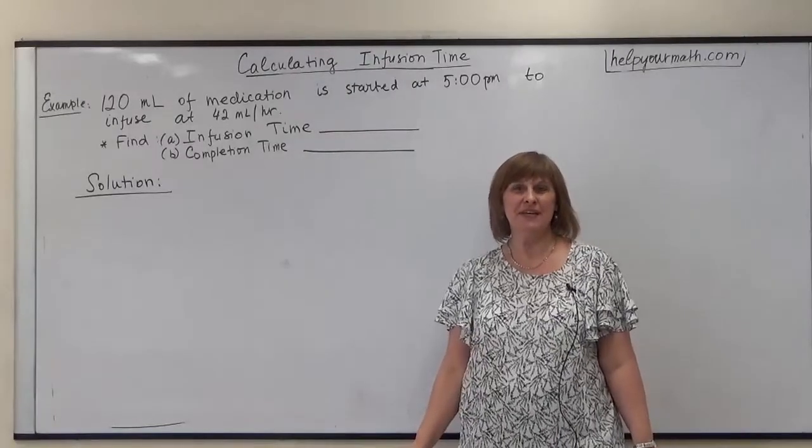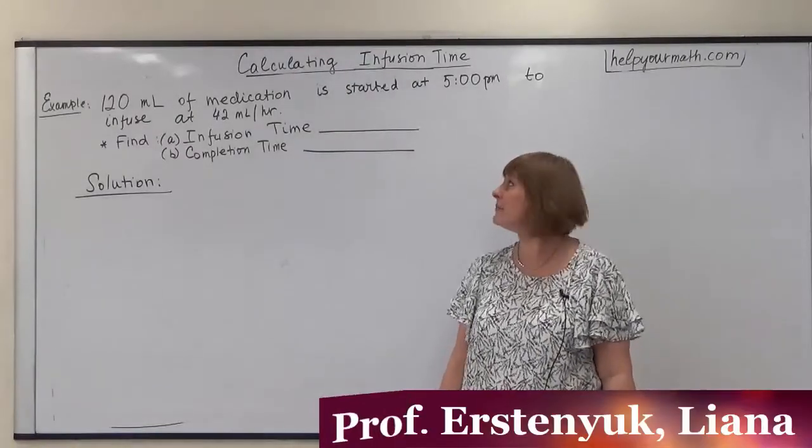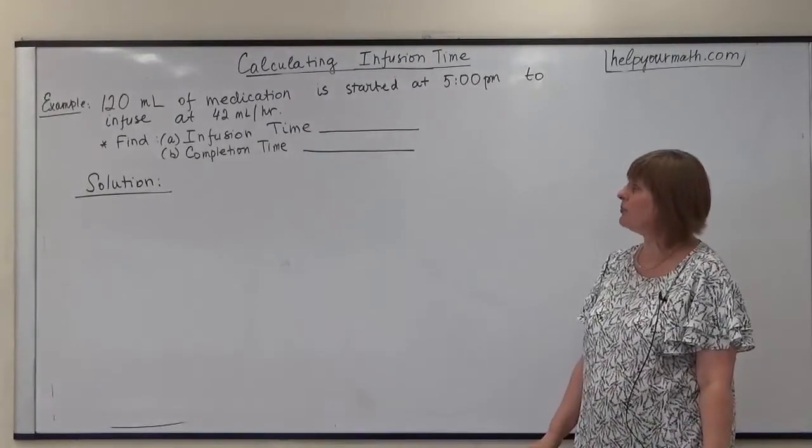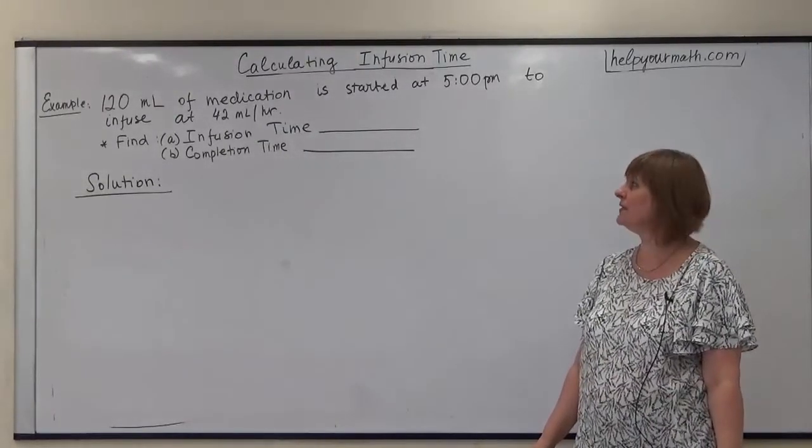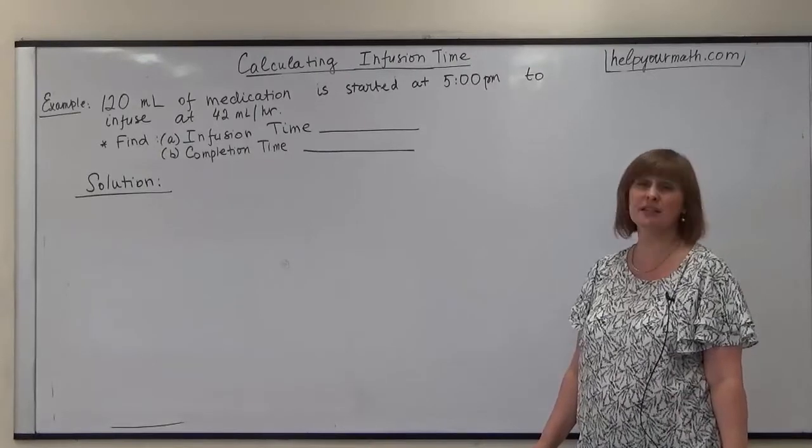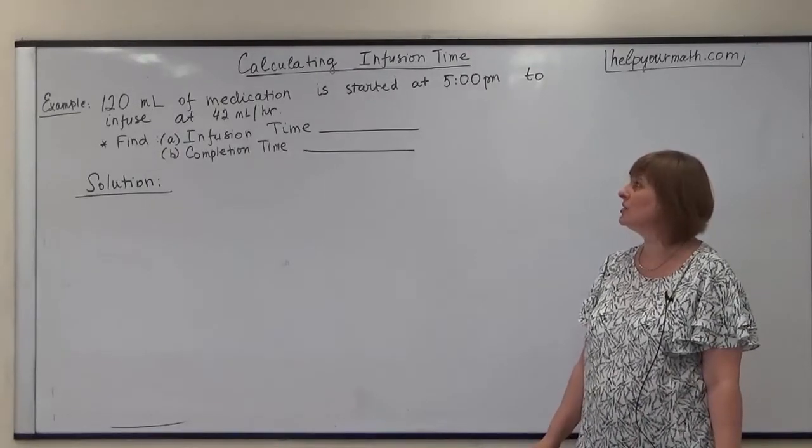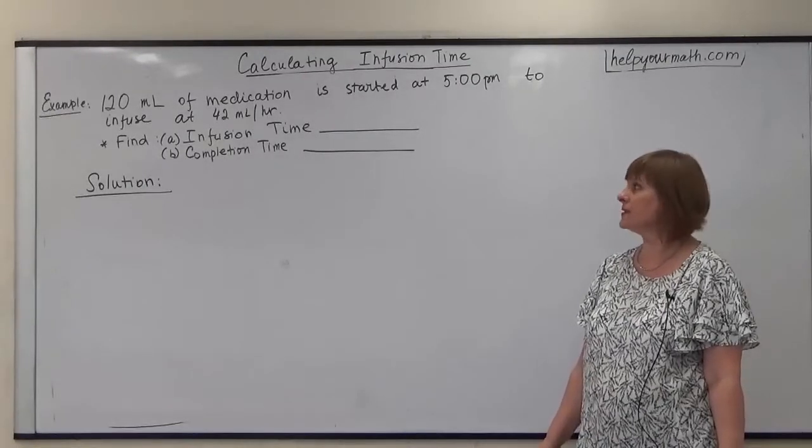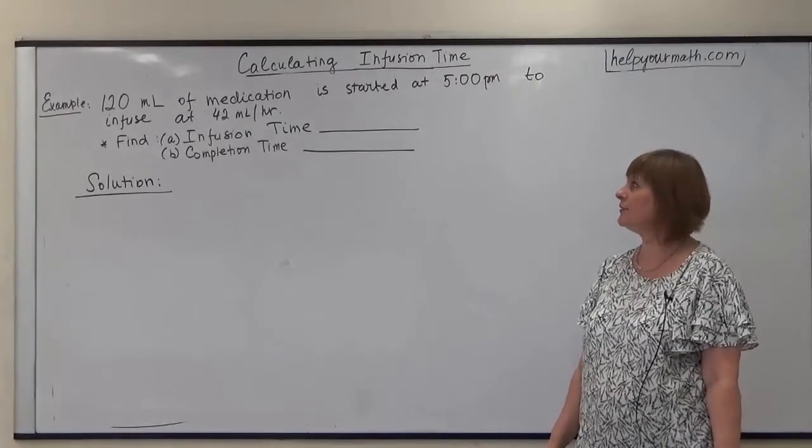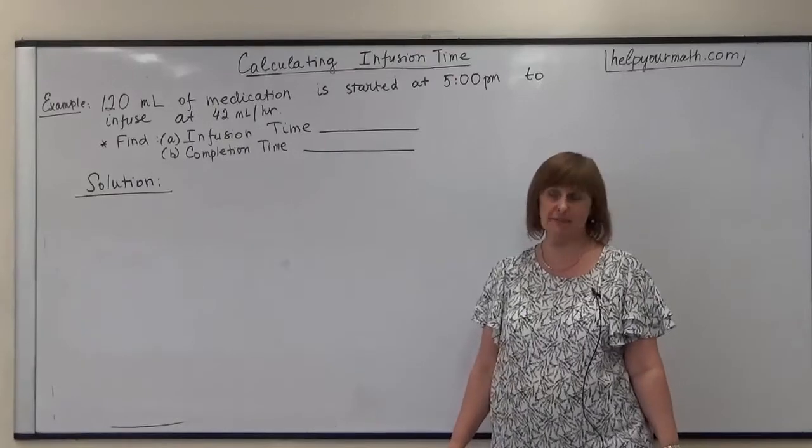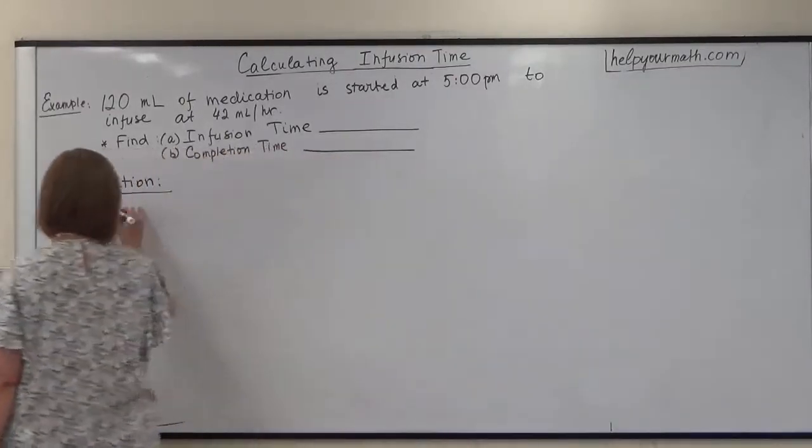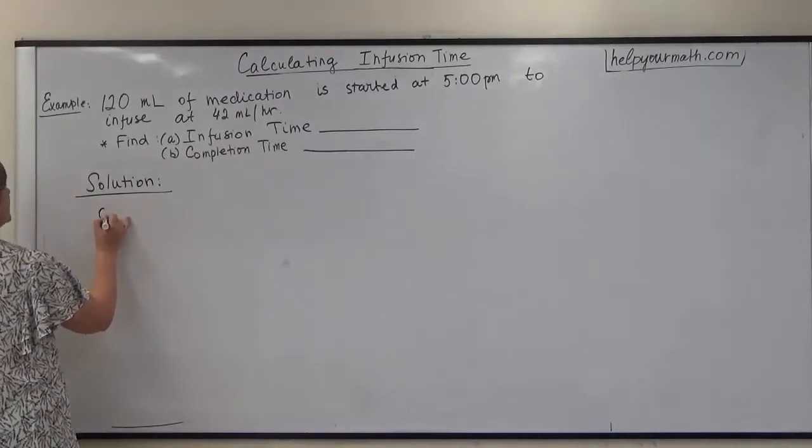Welcome to Help Your Math. We will look at the example of calculating infusion time at this moment. Our problem is 120 milliliters of medication is started at 5 p.m. to infuse at the rate 42 milliliters per hour. So we need to find first infusion time and then completion time. Our solution is first we need to work on finding infusion time A.